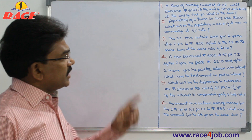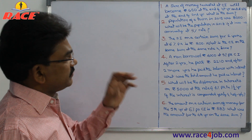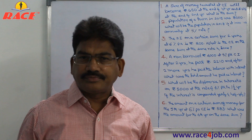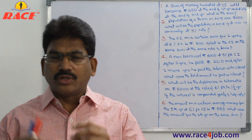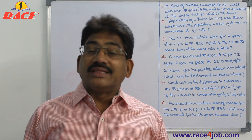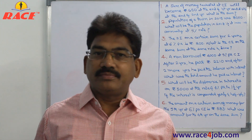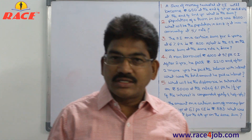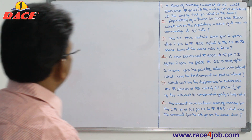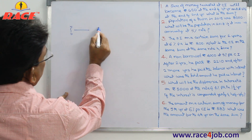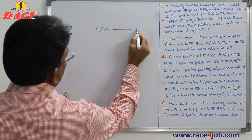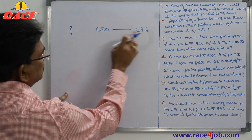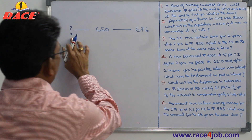See the first one. A sum of money invested at compound interest will become 650 at the end of the first year and 676 at the end of the second year. What is the sum? That money has become 650 after 1 year and 676 after 2 years. This is the amount after 1 year and this is the amount after 2 years. We have to find out the principal.